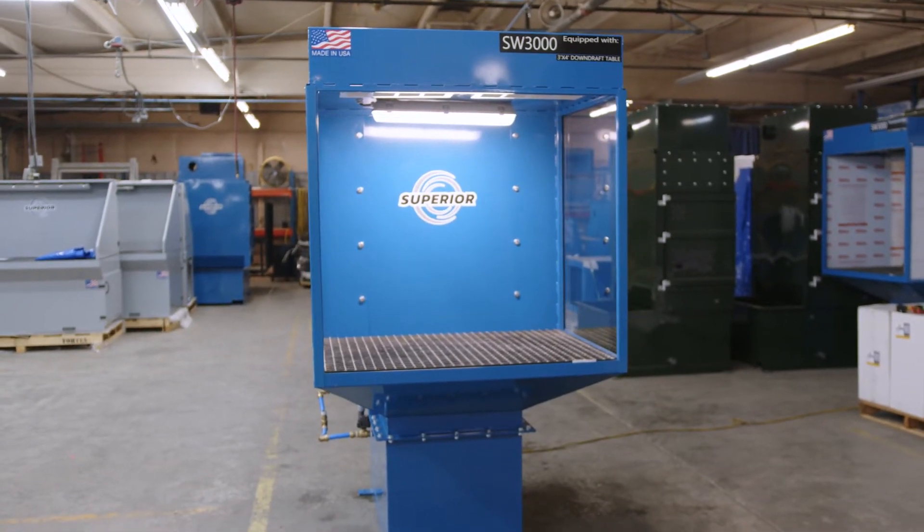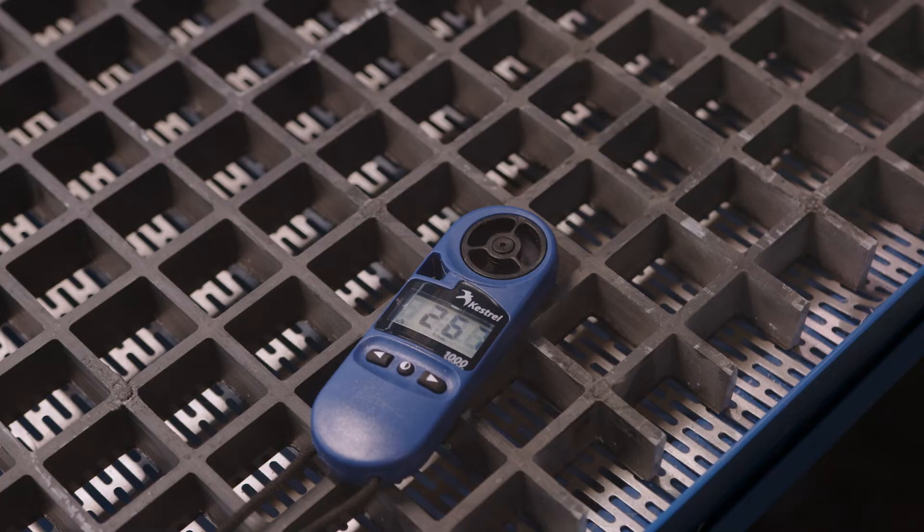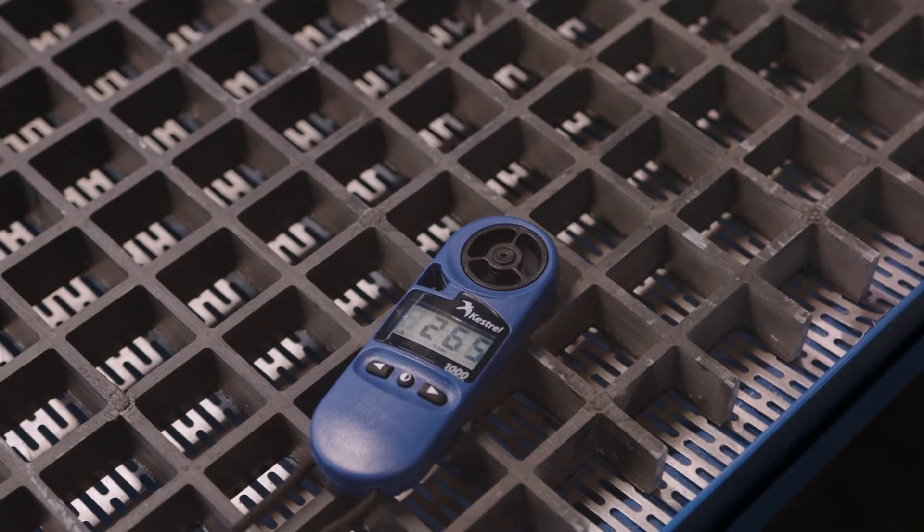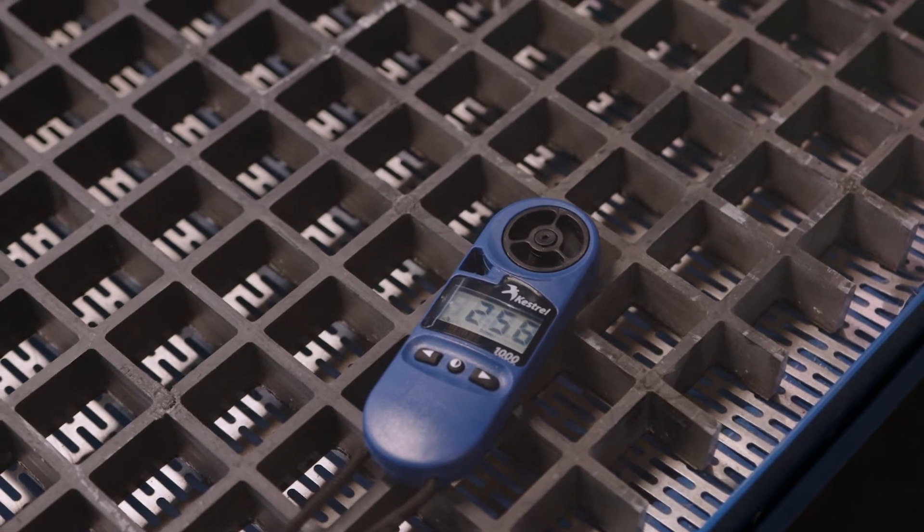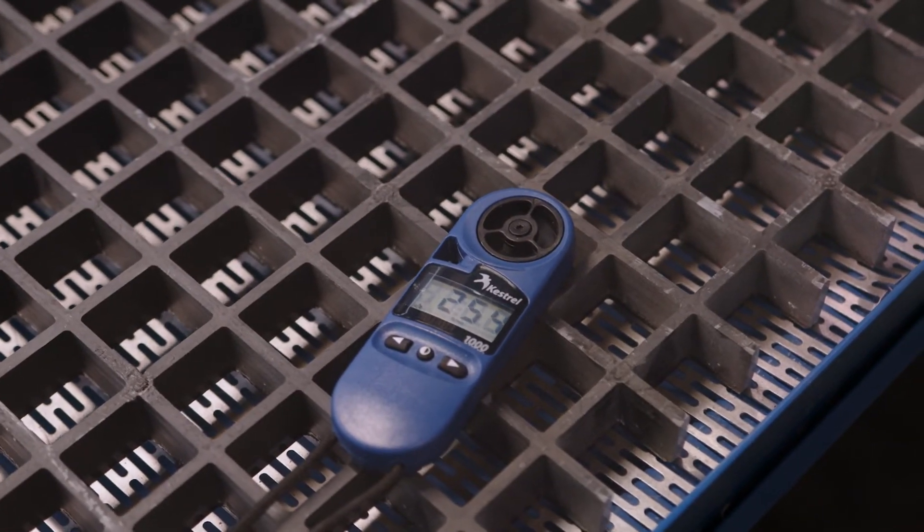If your unit is a downdraft table, it is designed to operate at a minimum of 250 feet per minute of downdraft suction. This can be measured at the table surface and is noted on our quality control check sheet when it's shipped from our factory.